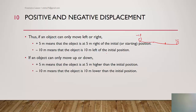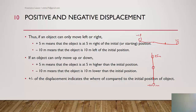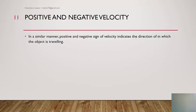The same applies to vertical movement. If an object can only move up or down, positive means the object is higher than the initial position. So plus 5 meters means it moved up; minus 10 meters means it moved down. The positive and negative displacement indicates the object's position compared to the initial position.